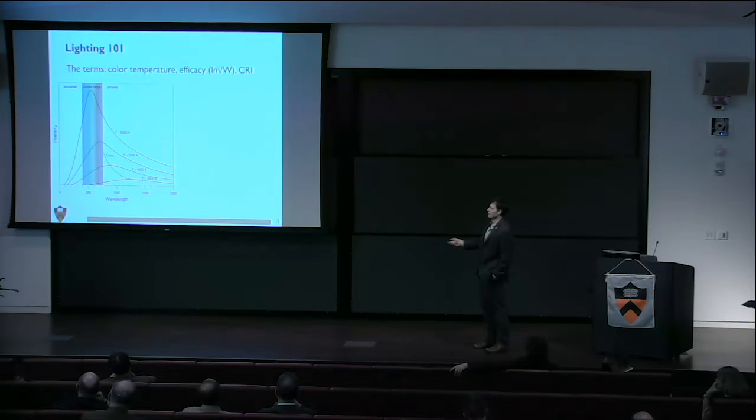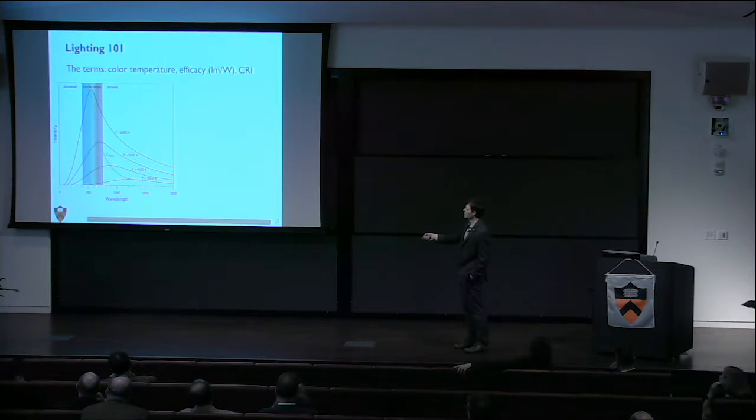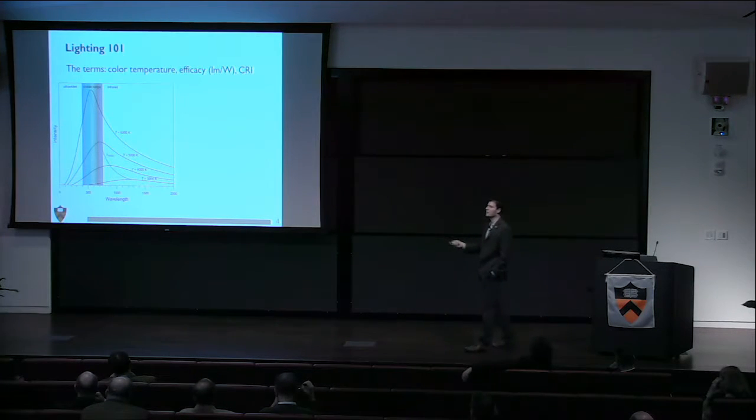Newer luminaires, solid state lighting, try to focus all their light in the visible spectrum. When we try to understand color temperature, it means what is the spectrum of the light, how close is that spectrum from the lighting source compared to some temperature of this Planckian black body locus. Does the spectrum look closest to 5000 K, or closest to 3000 K? That's what color temperature means.